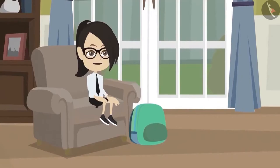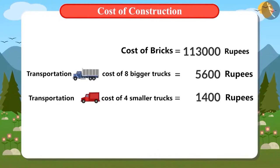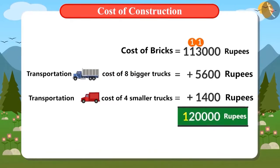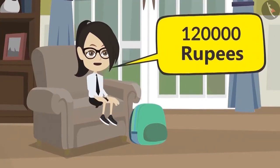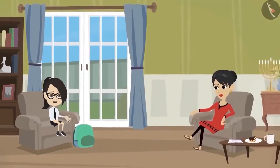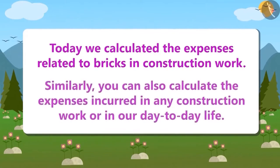Now I have calculated all the expenses related to bricks, including the value of bricks and the cost of transporting the bricks. Adding them all, the answer is 1 lakh 20,000 rupees. It means that it will cost 1 lakh 20,000 rupees just to purchase the required bricks to build the top floor of our house. Today we calculated the expenses related to bricks in construction work. Similarly, you can also calculate the expenses incurred in any construction work or in our day-to-day life.